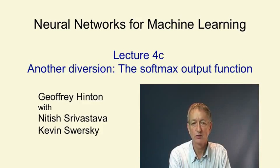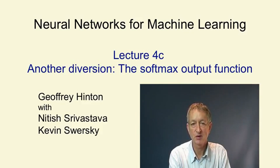In this video, we're going to look at the softmax output function. This is a way of forcing the outputs of a neural network to sum to one, so that they can represent a probability distribution across discrete mutually exclusive alternatives.